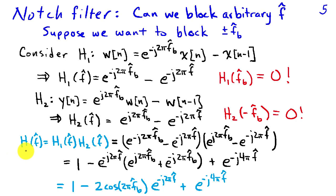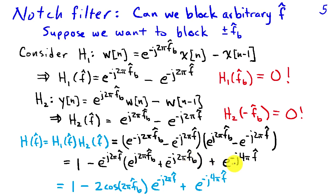The cascade combination of these two systems blocks both frequencies, because at either f hat or minus f hat sub b we'll have 0 times some number. The frequency response is the product of the individual frequency responses. Multiplying these terms out, we find 1 minus e to the minus j 2 pi f hat times the quantity e to the j 2 pi f hat b plus e to the minus j 2 pi f hat b, plus e to the minus j 4 pi f hat. We recognize the term in parentheses is just 2 times cosine of 2 pi f hat b.